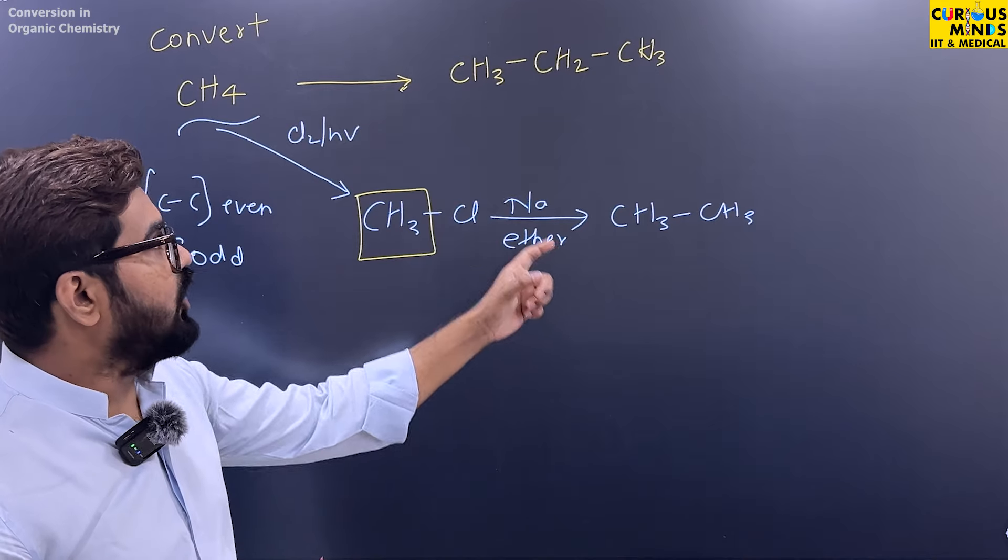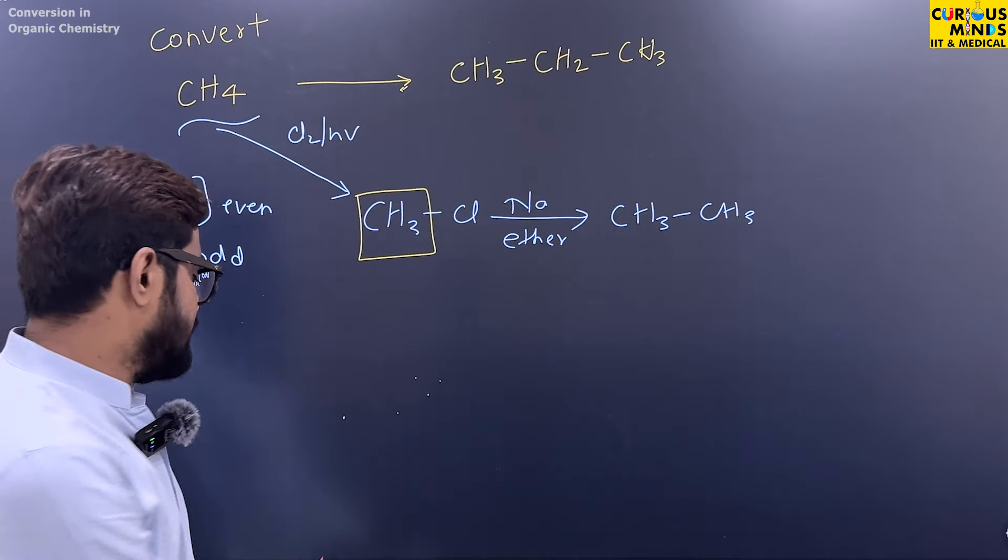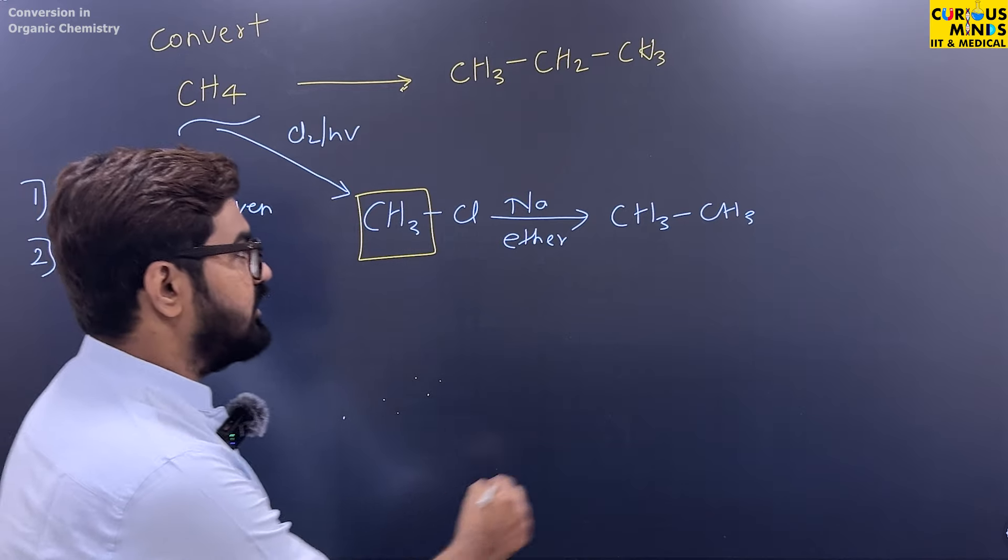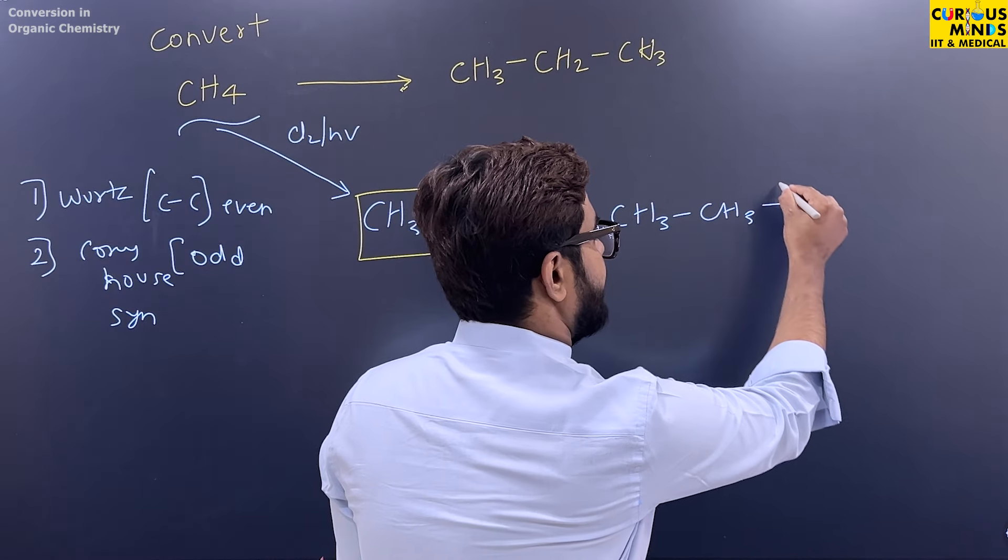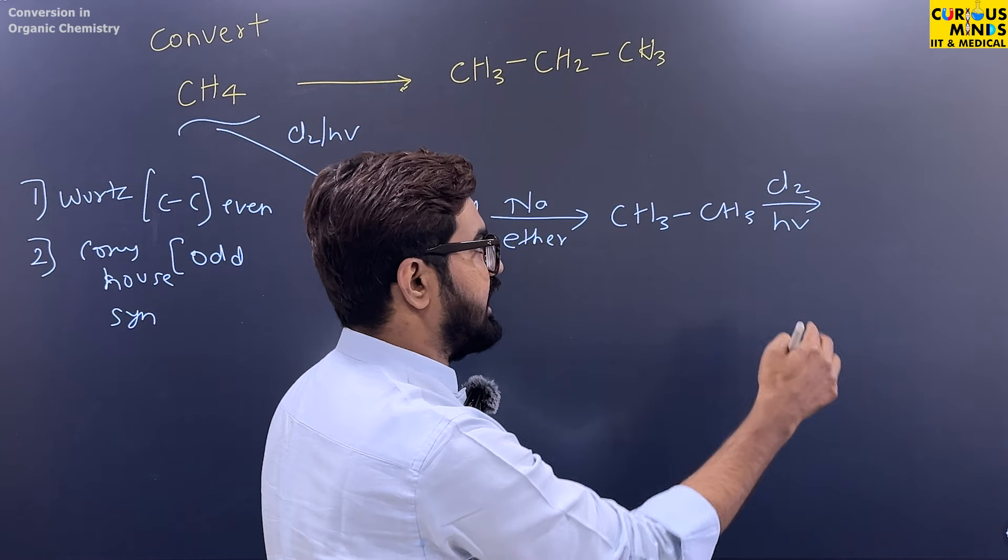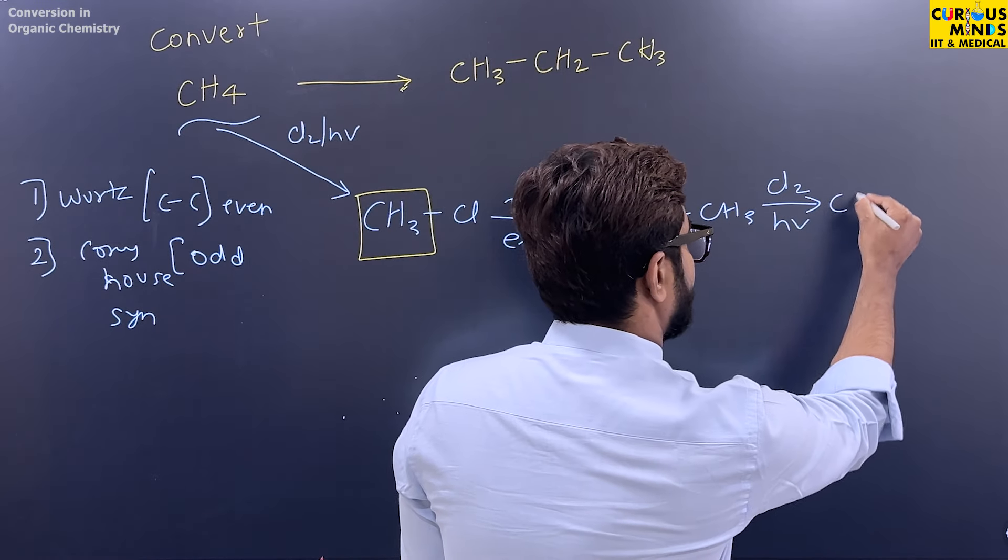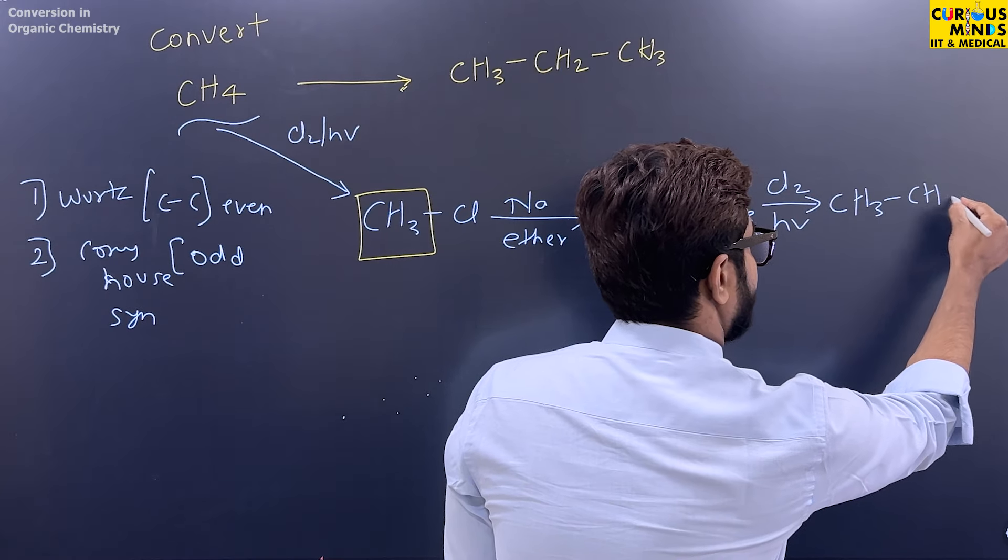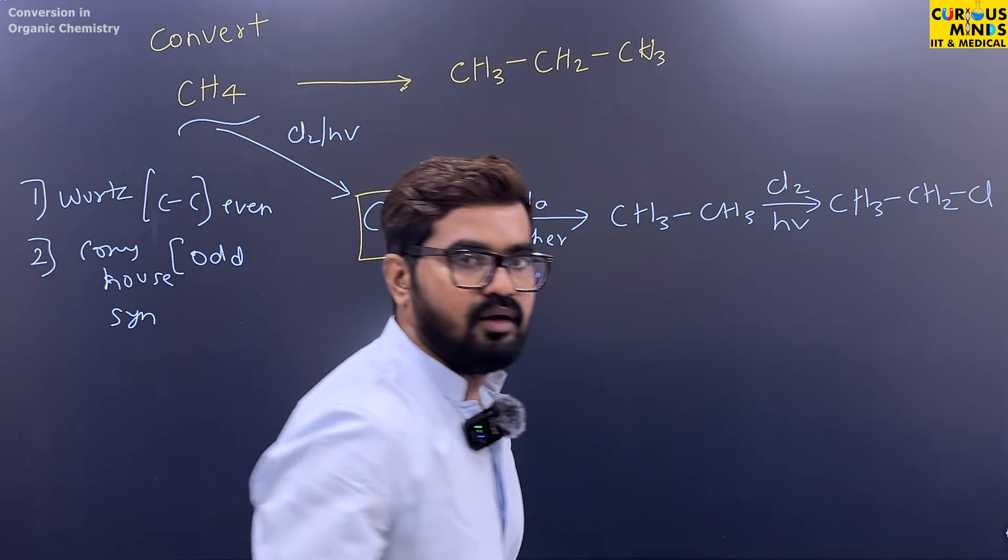Now I have to add another carbon chain. So what will you do? Again, you will do Cl2 in presence of sunlight. What will happen? One hydrogen replaced by one chlorine. So you will get CH3-CH2-Cl.